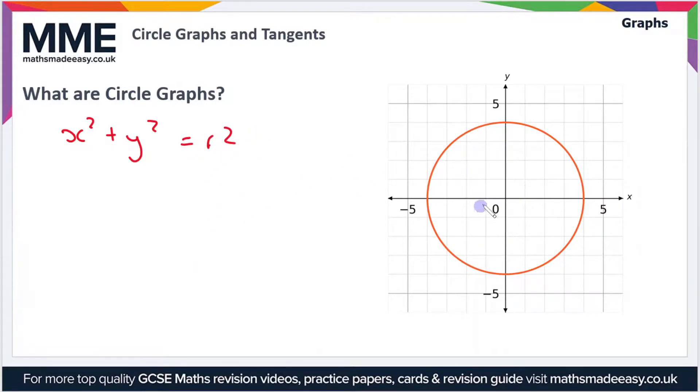If we look at this example here, we can see that this has a radius of four, so the equation could be written as x squared plus y squared equals four squared, or we could write this as x squared plus y squared equals 16.